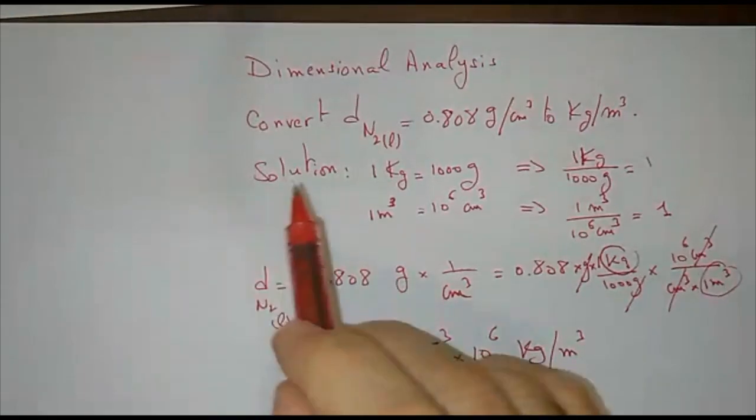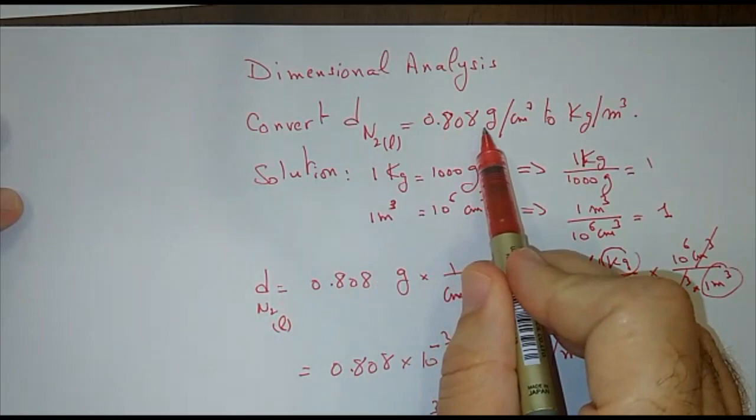In this problem, we need to convert the density of nitrogen liquid from 0.08 gram per centimeter cubed to kilogram per meter cubed.